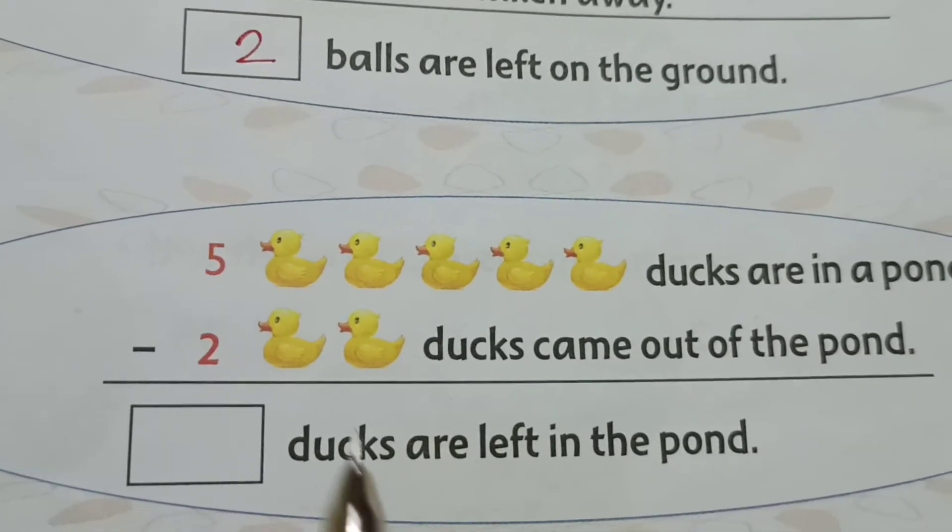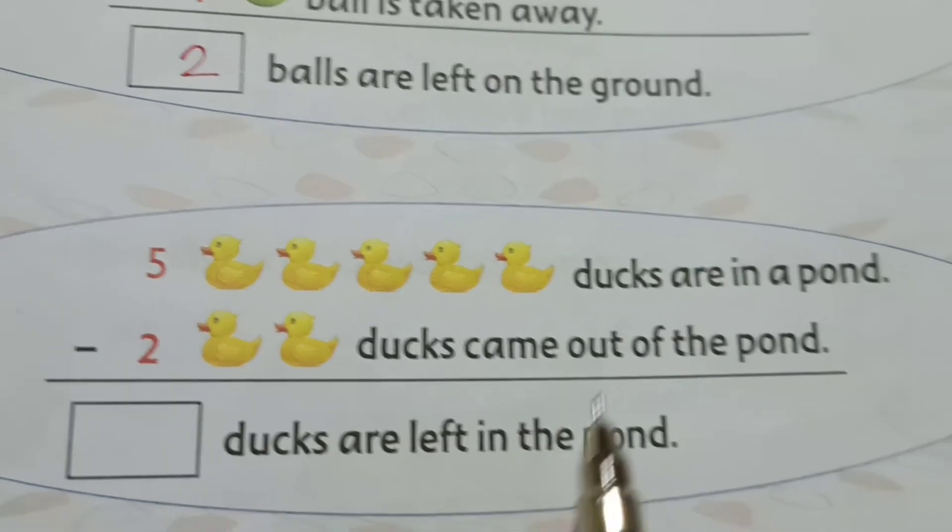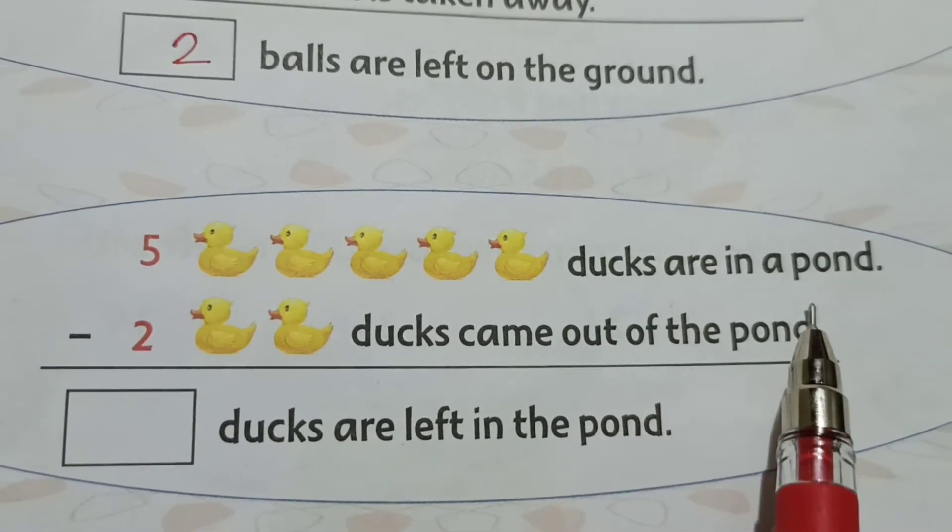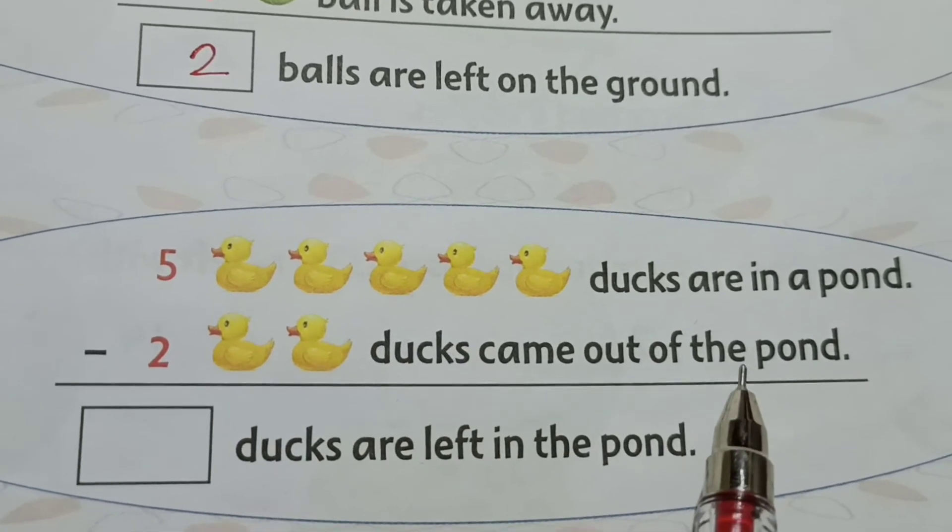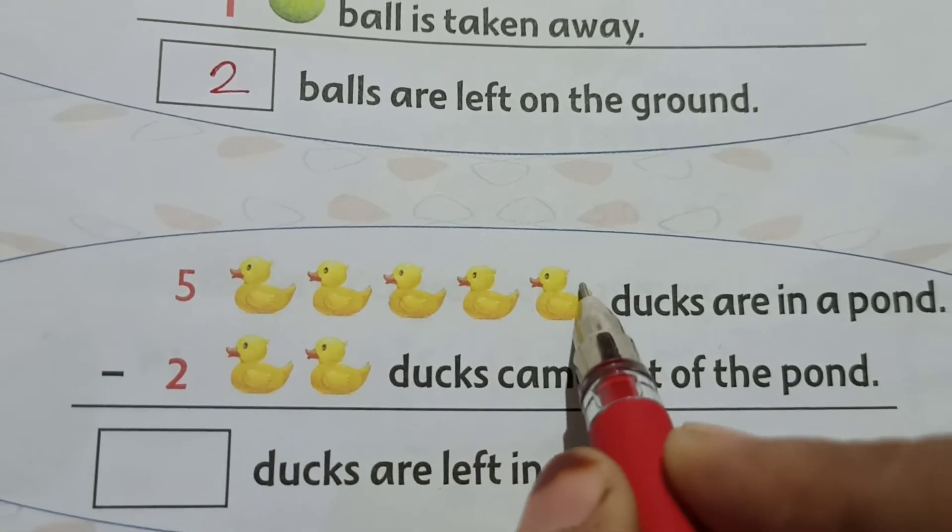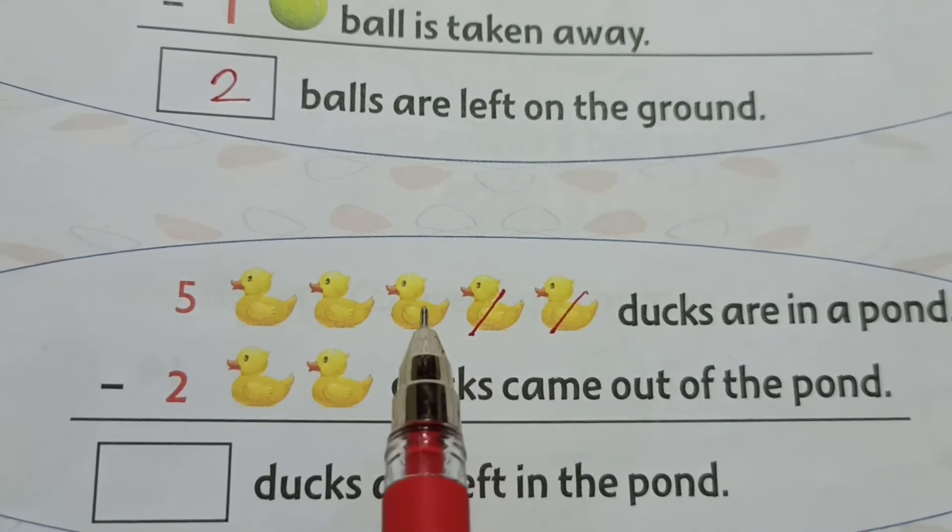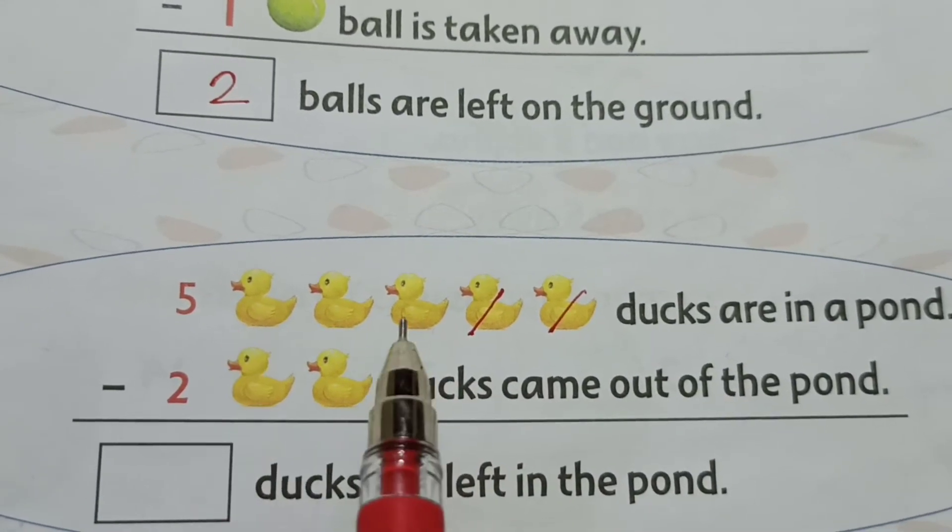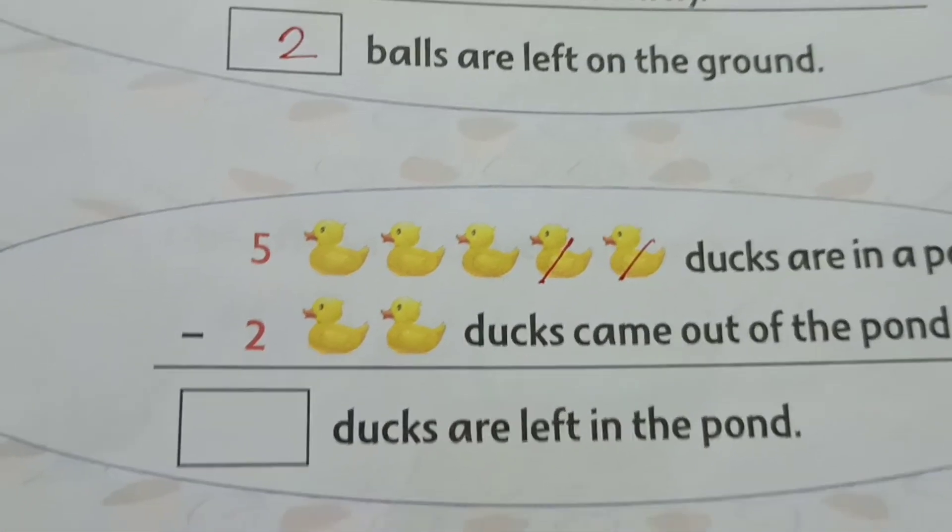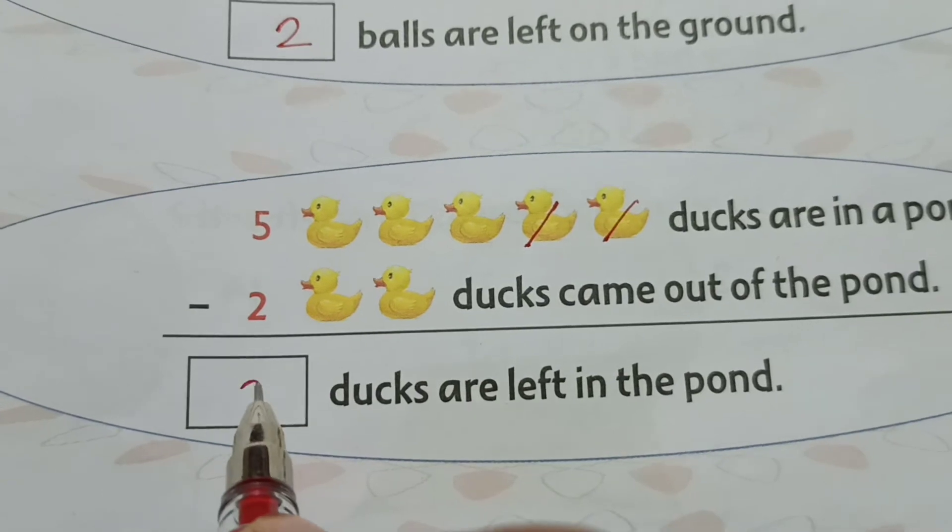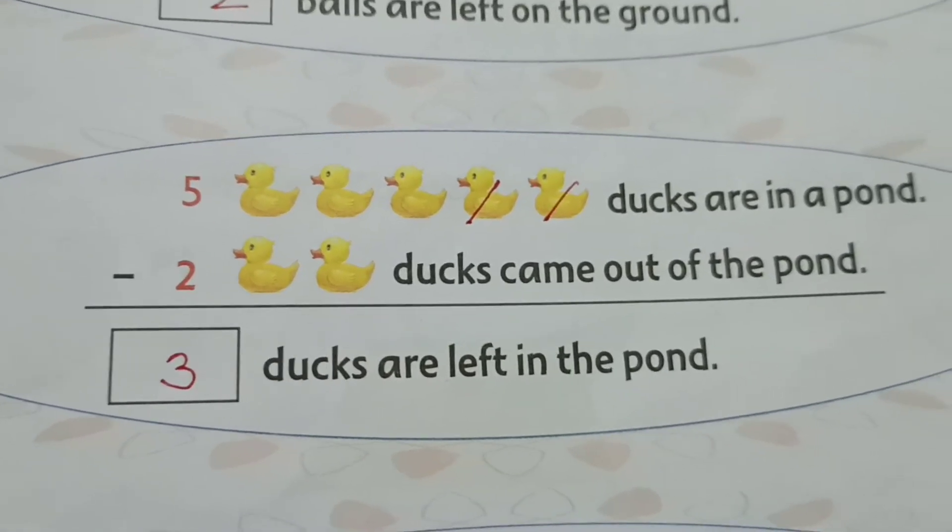1, 2, 3, 4, 5. 5 ducks are in a pond. 2 ducks came out of the pond. So take out 2 ducks: 1, 2. Now you can see here, how many remains here? 1, 2, 3. So how many remains? 3 ducks remain. 3 ducks are left in the pond.